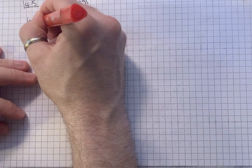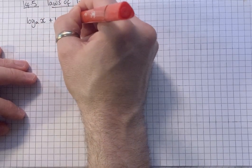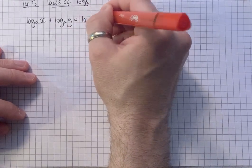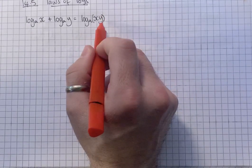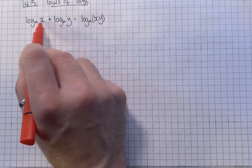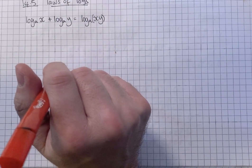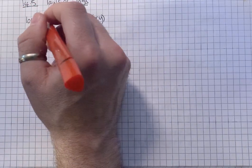So, log to the base a of x, plus log to the base a of y, equals log to the base a of xy. That's how we combine it. So if you remember, with powers, if you multiply, you add the powers together. Same here. And that's called the multiplication rule.